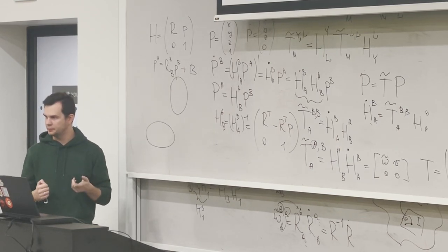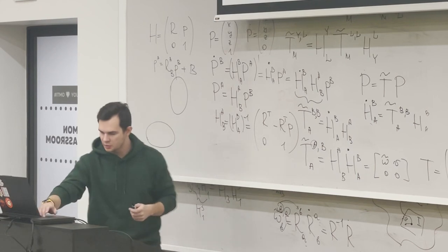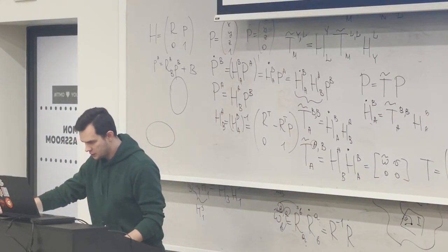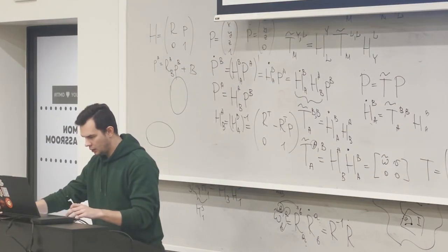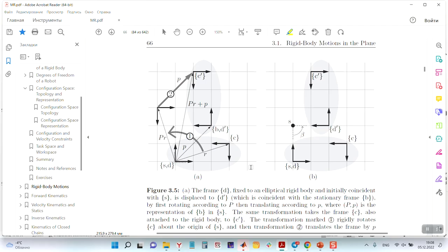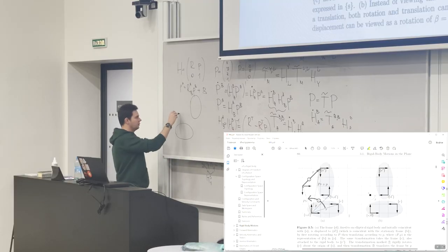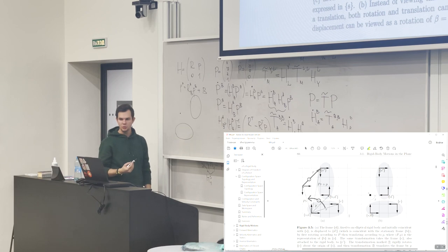Or we can do it simultaneously. Let me just show you a part of this material in the book of Kevin Lynch. So here there is a third chapter about rigid body dynamics. We can think about it as rotation and then translation on the left, or we can find such a point right here and the motion will be just rotation around this point.